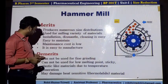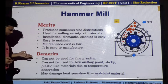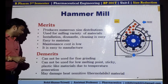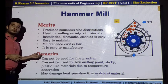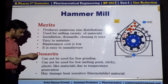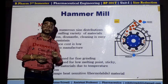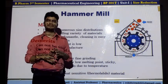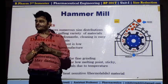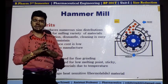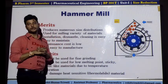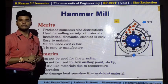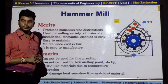Now let's discuss the demerits of the hammer mill. The very major disadvantage is that it cannot be used for the processing of very fine material. If we want to have a very fine particle size material, we cannot produce very small particle size material using the hammer mill. It is the major disadvantage of the hammer mill.